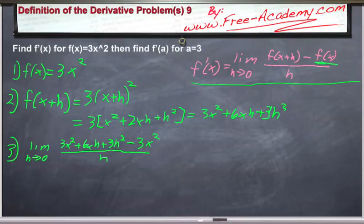Now step 4: solve. 3x² minus 3x² immediately cancels. And we can rewrite this as a limit as h goes to 0 of 6xh + 3h² divided by h.